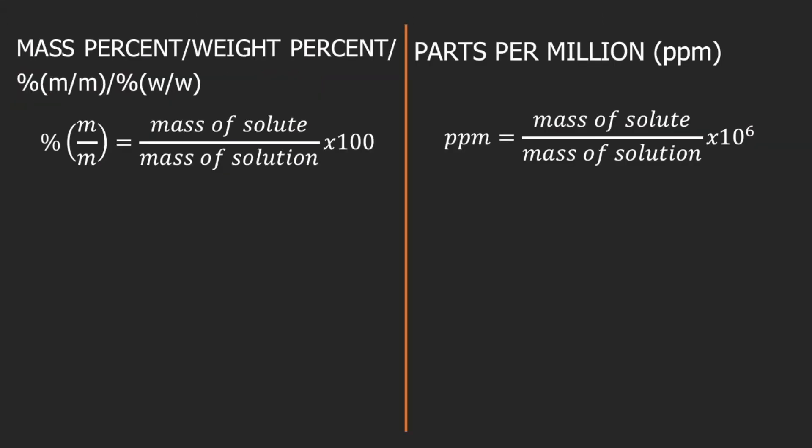Let's have a quick recap. Mass percent is also known as percent by mass, weight percent, or percent by weight. You can also see symbols like percent mass over mass or percent weight over weight. Mass percent is equal to mass of solute divided by mass of solution, times 100.